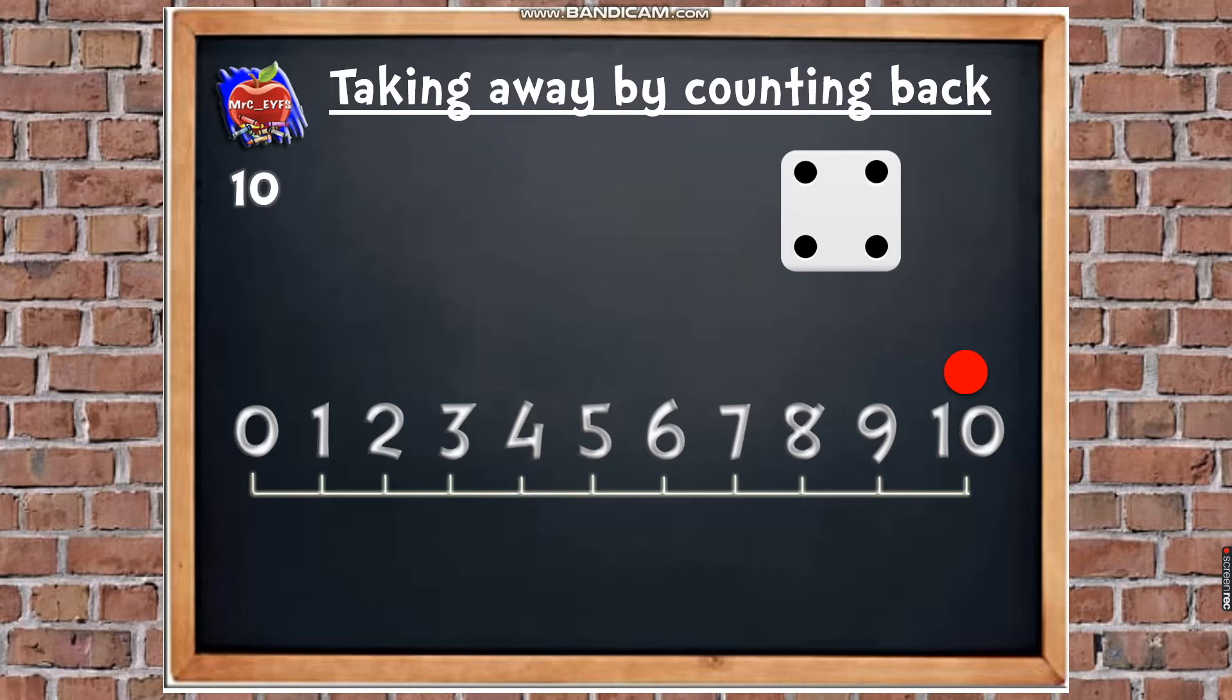And we're going to see how many we need to take away. So how many is there? Yep, 4. So our number sentence will be 10, take away 4, equals.